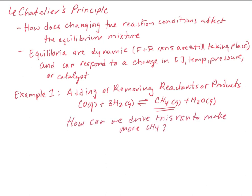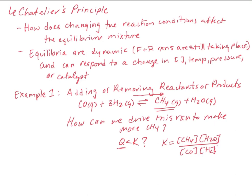Starting from the concept of adding or removing reactants or products: if we want to drive the reaction to making more CH₄, we want to drive this reaction to the right — to favor the forward direction. To favor the forward direction, we need Q to be less than K. We need to have too few products and too many reactants so the reaction is going to want to drive forward.